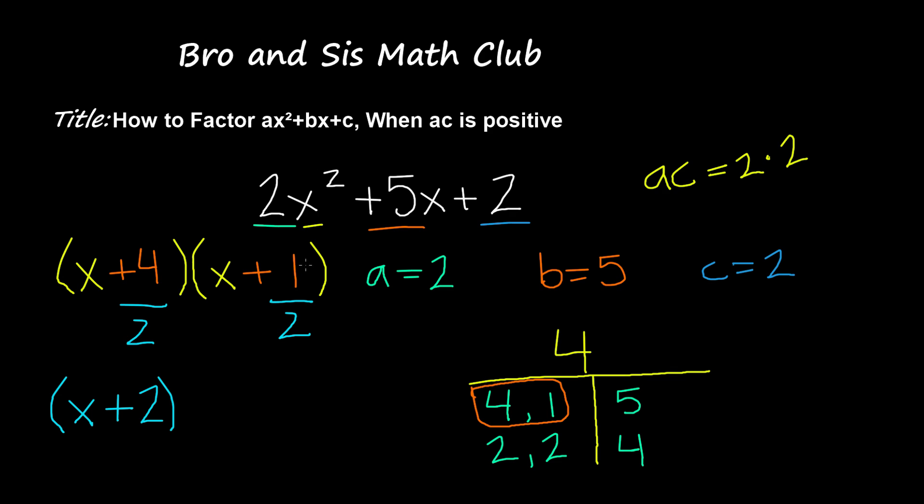But then we have 1 divided by 2, and we know that we cannot have a fraction in our binomials, so we're going to take the 2 and put it beside the x, multiply it by x. So 2 times x is 2x, and I'm going to bring down the 1 as it is, so I have 2x plus 1.